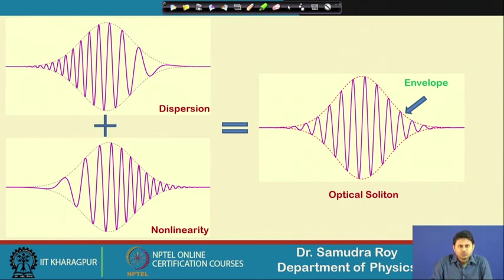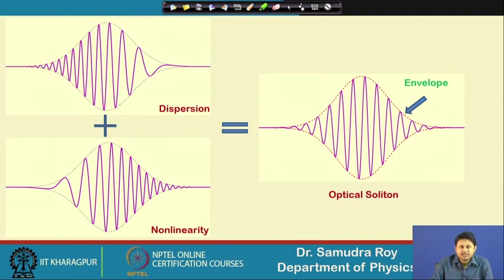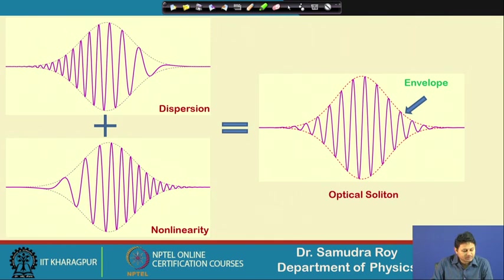A figure is also shown to you: dispersion and nonlinearity can produce some sort of chirped wave packets. These chirped wave packets can be added, and if the amount of dispersion and nonlinearity is fixed such that they counterbalance, then we can have an optical pulse whose frequency distribution is not chirped — and we call it an optical soliton.